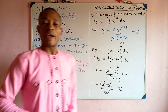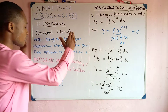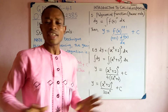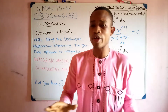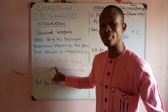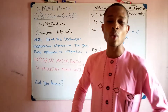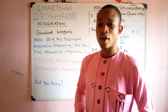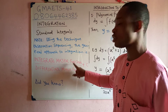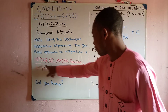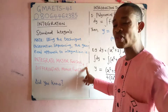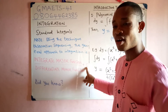We start by looking at the general concept of integration. If a problem is given to you on integration, all you need to do is to apply the Technique Observation Sequencing pattern. Integrate the major function, then divide by the differentiated minor function, then put plus C. The plus C is your constant of integration.